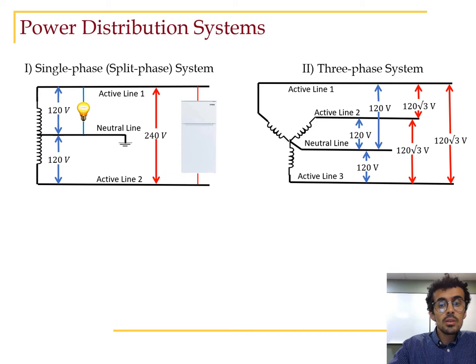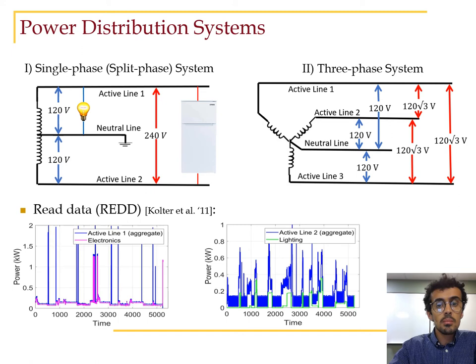The power consumption readings are often taken at every live conductor, however the prior approaches in energy disaggregation literature don't consider the connectivity structure and assume that aggregated power is drawn only from a single line by summing them up. We demonstrate the connectivity structure by using the popular baseline dataset, REDD, which follows a single-phase system. Thus, it has two aggregated signals.